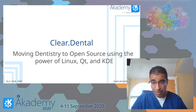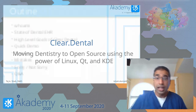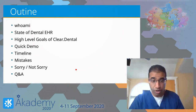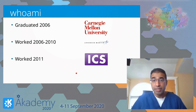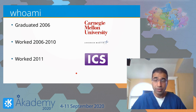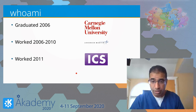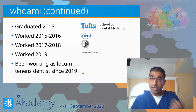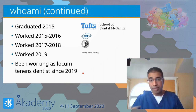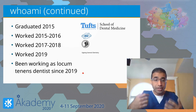I apologize in advance if I'm going really fast — I put a little too much content here. Brief introduction: I graduated from Carnegie Mellon in 2006 in Information Systems, Human-Computer Interaction, and Computer Science. I worked as a software engineer for Lockheed Martin for a couple of years, then for a company called ICS where I got much more familiar with Qt and QML. Then I did the most logical next step and went to dental school, graduating from Tufts in 2015. I've been working as a practicing dentist for the last couple of years in different environments — large corporations, small private practices, as a locum tenens — getting a lot of diverse experience.